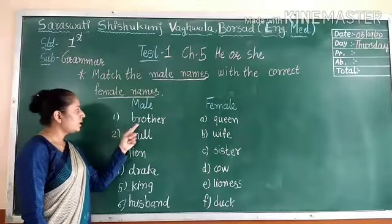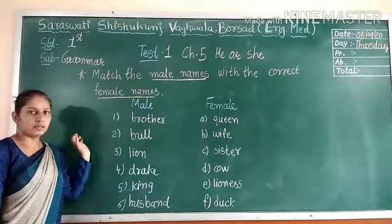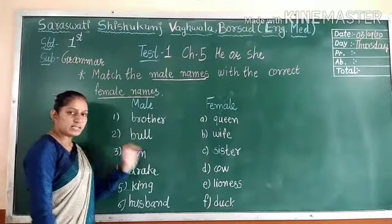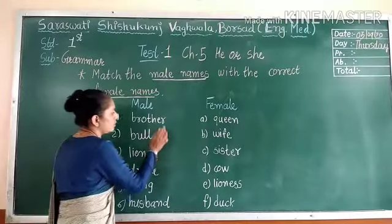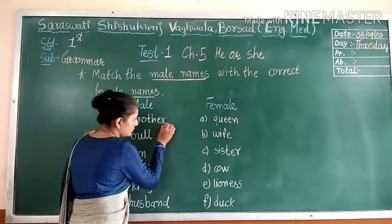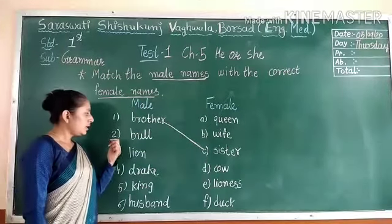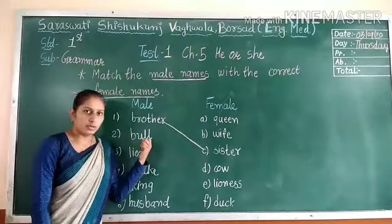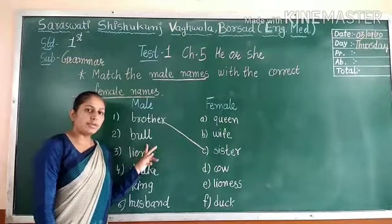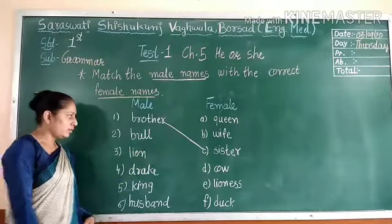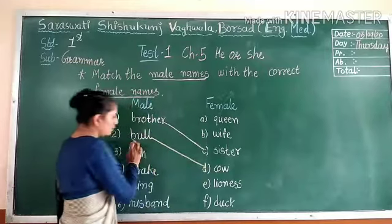First word: Brother. What is the female naming word of brother? Sister. So you have to match brother with sister. Second number: Bull. Bull is the male naming word of the animal. What is the female naming word of bull? Cow. You have to match bull with cow.